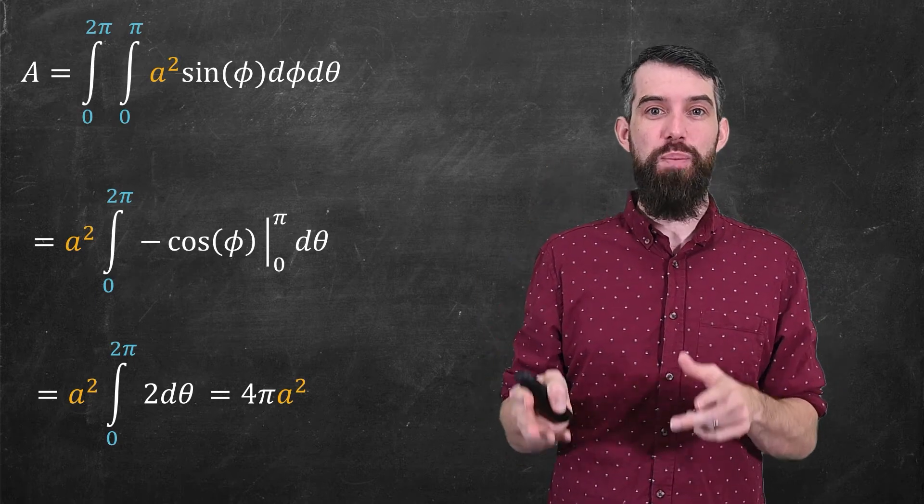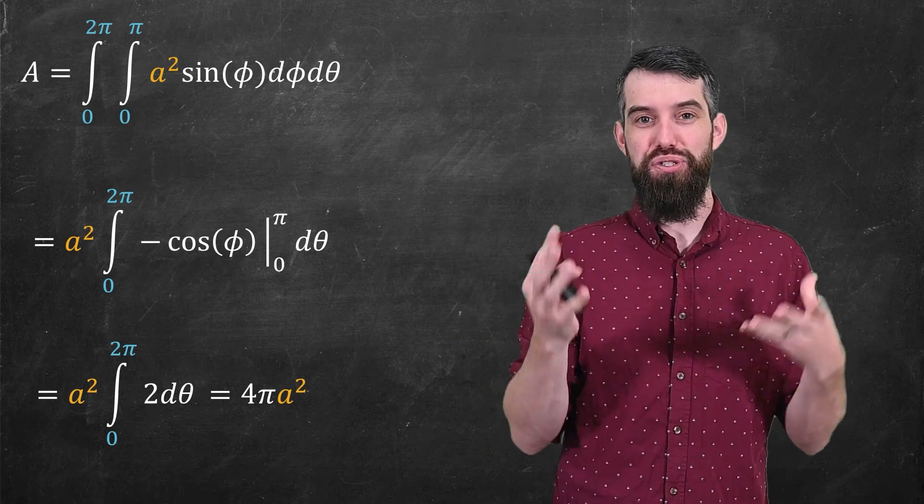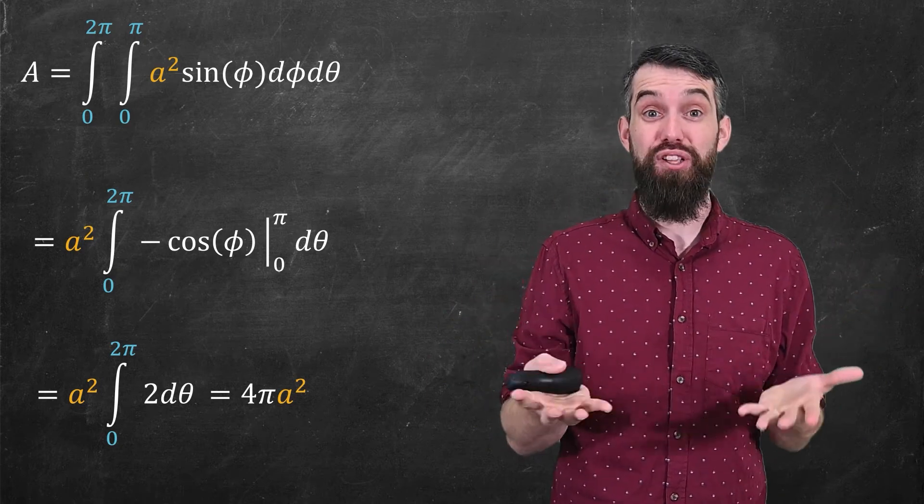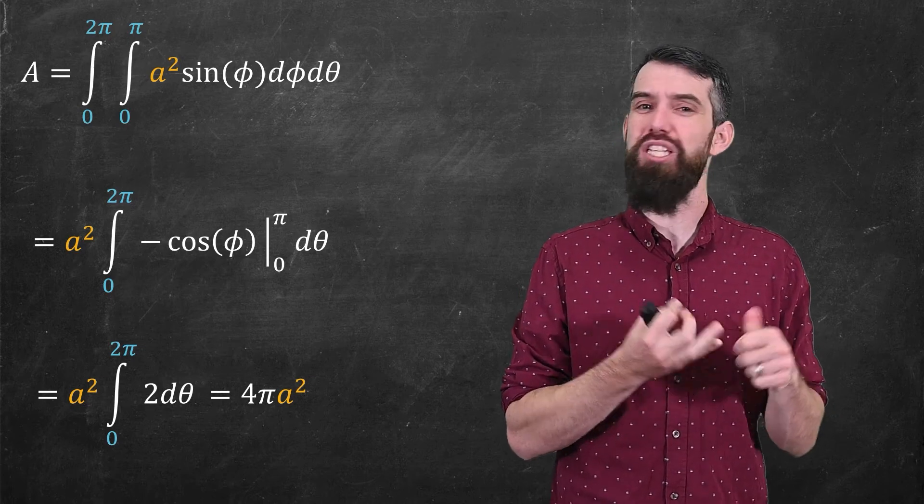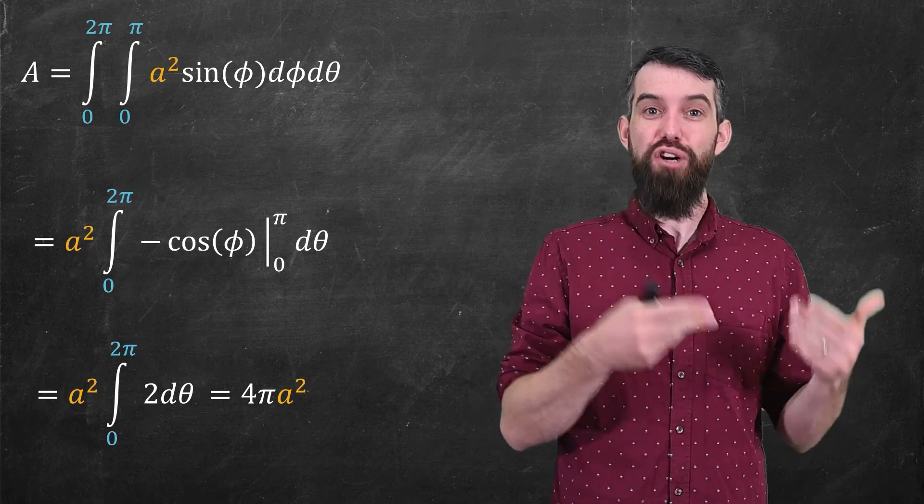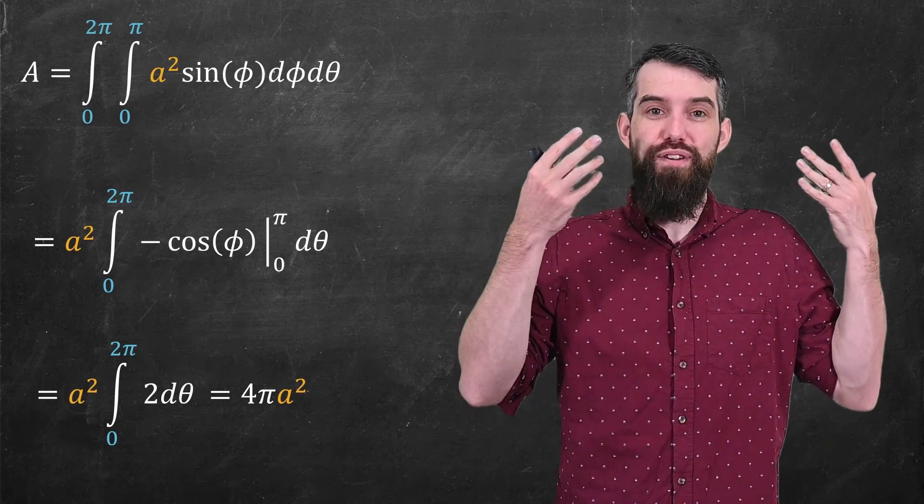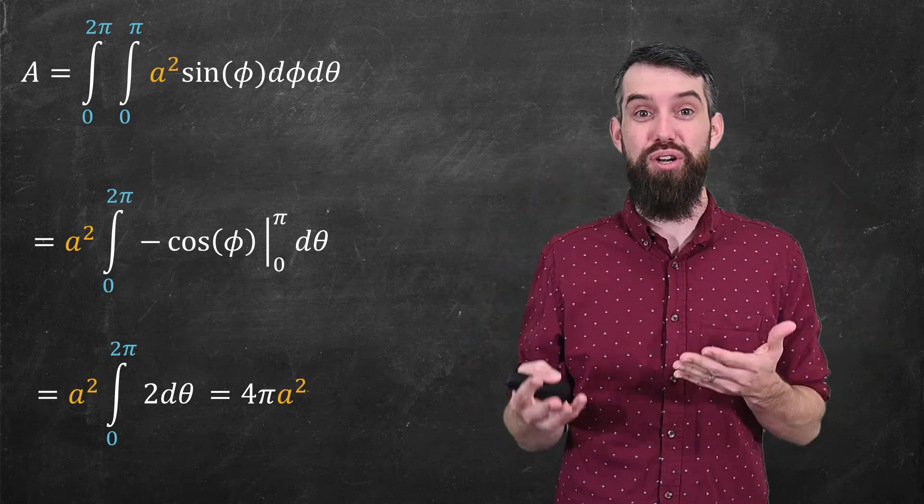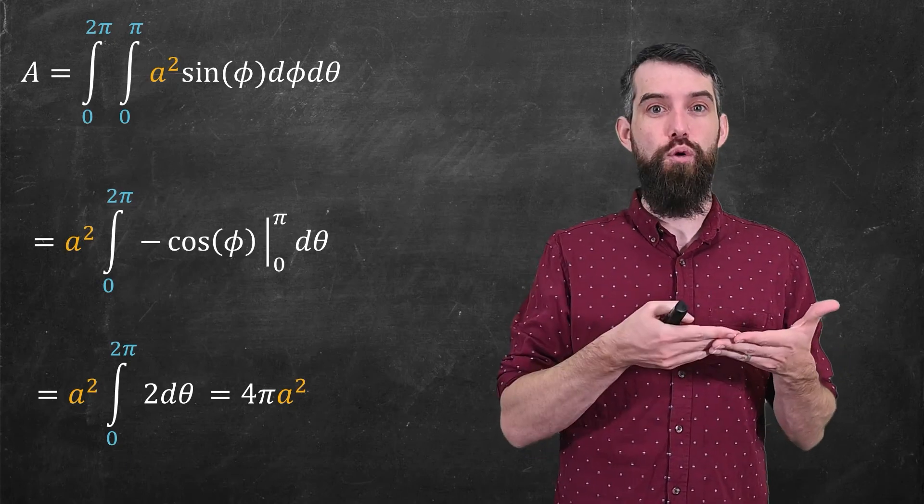So to do this computation, we used the power first of spherical coordinates, which naturally captures the geometry of things like spheres very effectively. We parameterized using those spherical coordinates, and then we just plugged into the surface area formula for a parameterized surface, and it was just a bunch of evaluations and some trigonometric tricks of Pythagoras identity to be able to compute out the final answer of this 4πa².